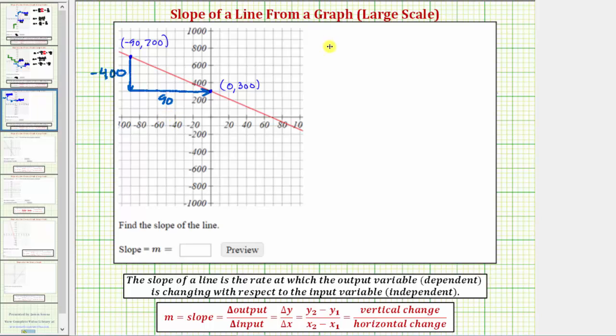So now we know the slope m equals the vertical change divided by the horizontal change, which for this line would be negative 400 divided by 90, or negative 4/90. We need to simplify this fraction though. 4 and 90 have a common factor of 10, so we'll divide the numerator and denominator by 10, which gives us a slope of negative 40/9.